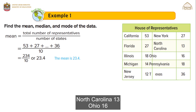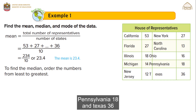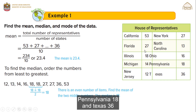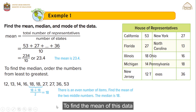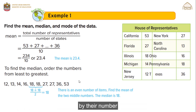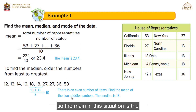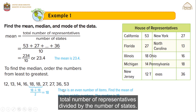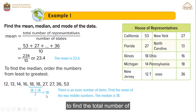To find the median, we need to order the data from least to greatest, starting with 12 and ending with 53. If we have an odd number of values, the median is the middle value. But if we have an even number of values, the median is the mean of the two middle numbers. In this situation, the two middle numbers are 18 and 18, so the median is 18 plus 18 divided by 2, which is 18.